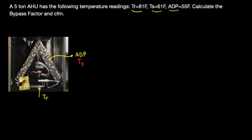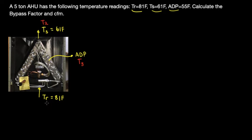We have the temperature of the return side and the temperature of the supply side. Temperature of the supply is 61 degrees Fahrenheit, and temperature of the return side is 81 degrees Fahrenheit. For our variable convention, temperature of the supply side is temperature two, and temperature of the return side is temperature one.